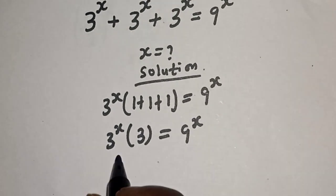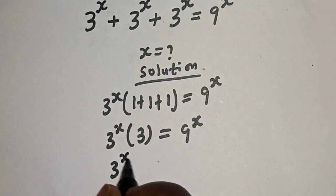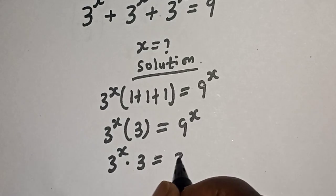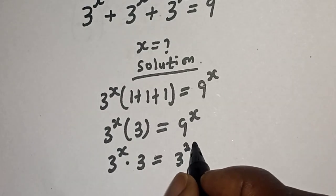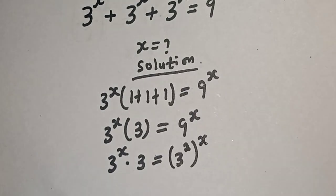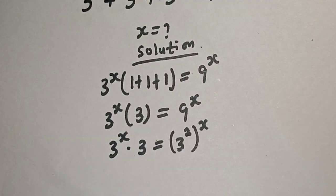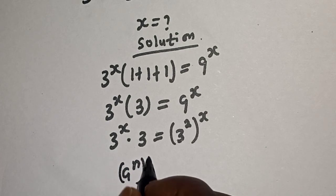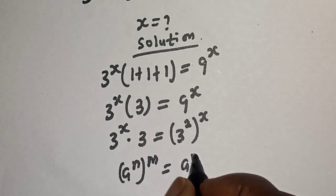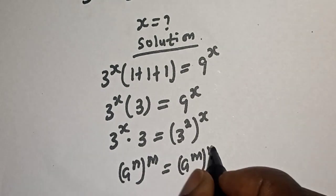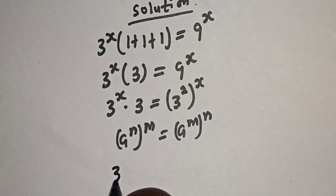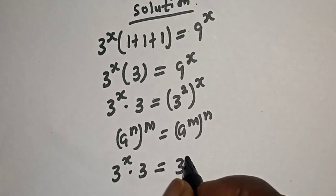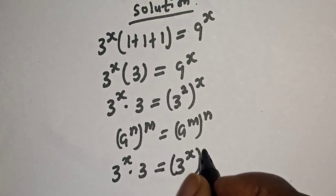So this is 3 raised to power s multiplied by 3 is equal to 9 raised to power s, which can be written as 3 squared raised to power s. Take note of the rule that a raised to power m raised to power n is equal to a raised to power m times n. So this gives us 3 raised to power s multiplied by 3 is equal to 3 raised to power 2s.